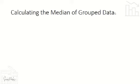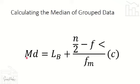Calculating the median of grouped data. The formula is: MD equals the lower boundary (L sub B) plus N over 2 minus F less than, all over F sub M (the frequency of the median class), times C.